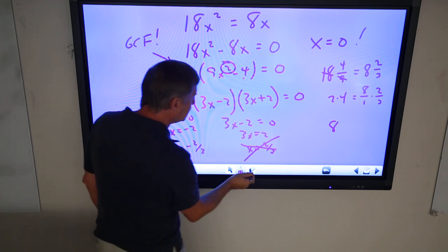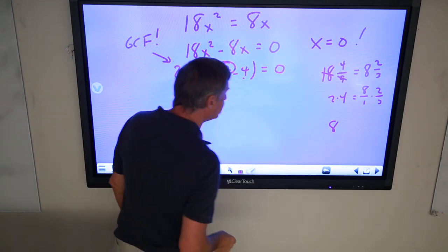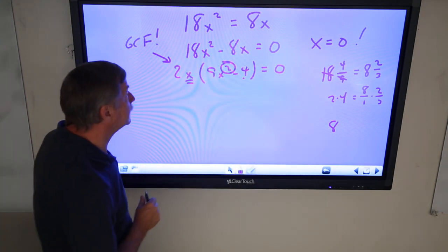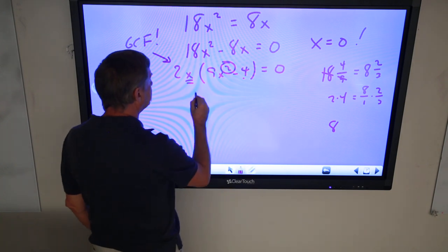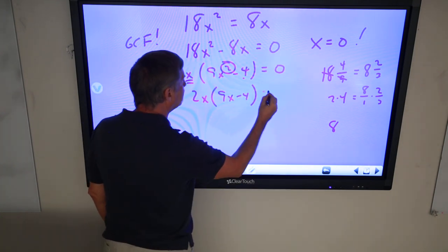So that means that this whole amount of work here is totally wrong, alright. And what it should be is 2x parentheses 9x minus 4 equals 0.